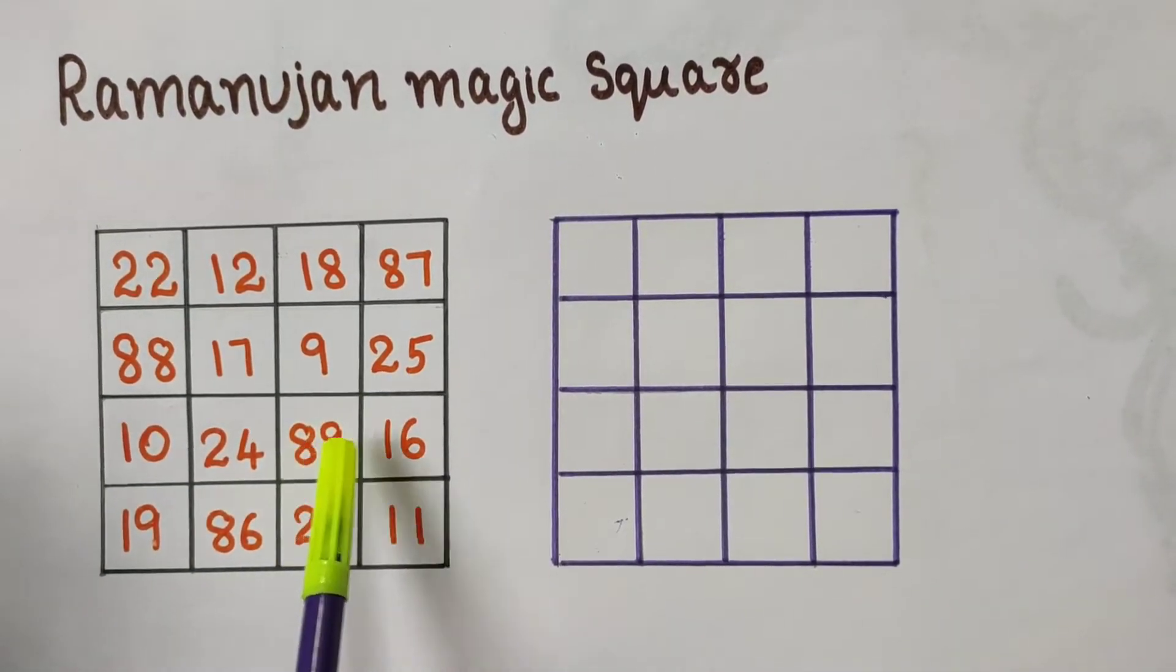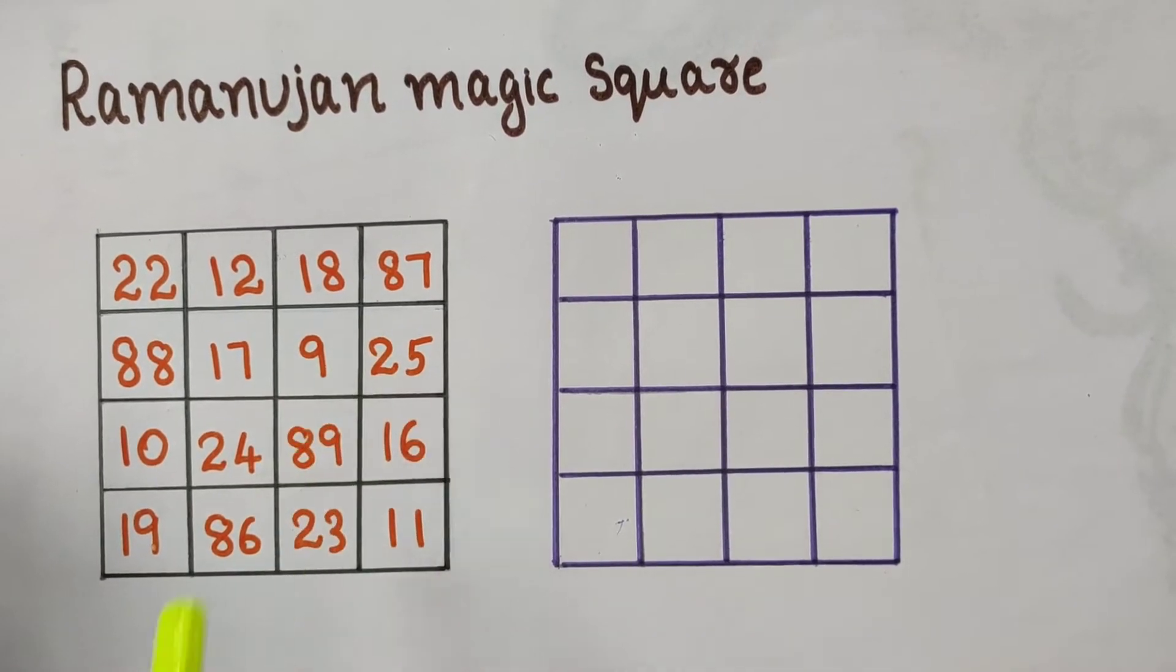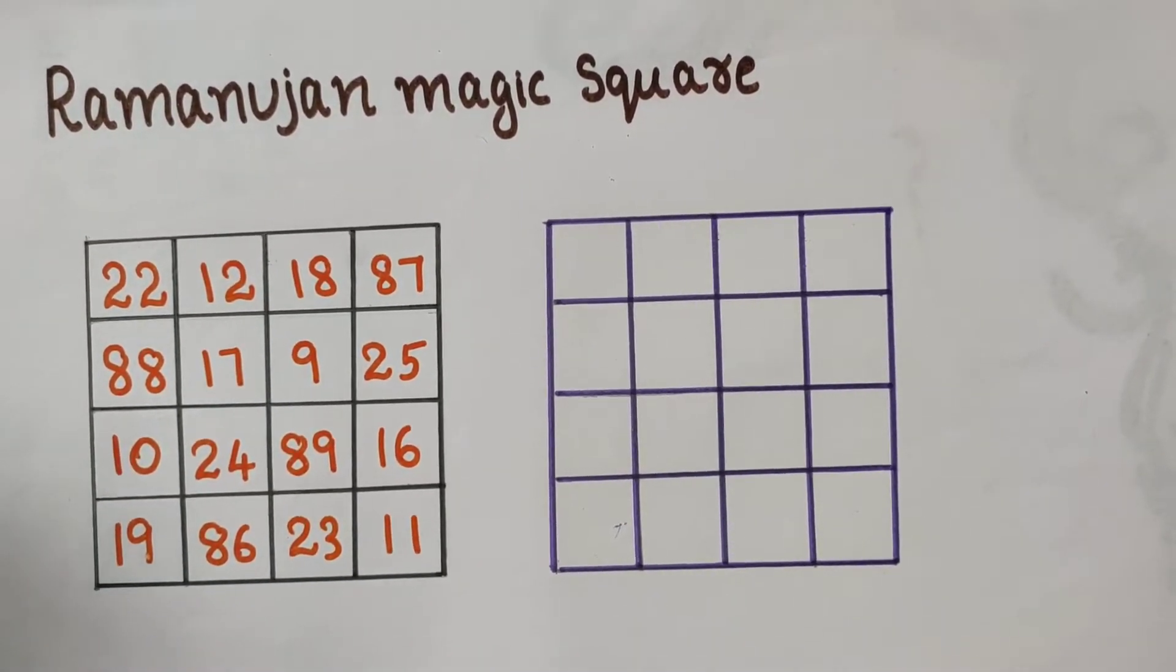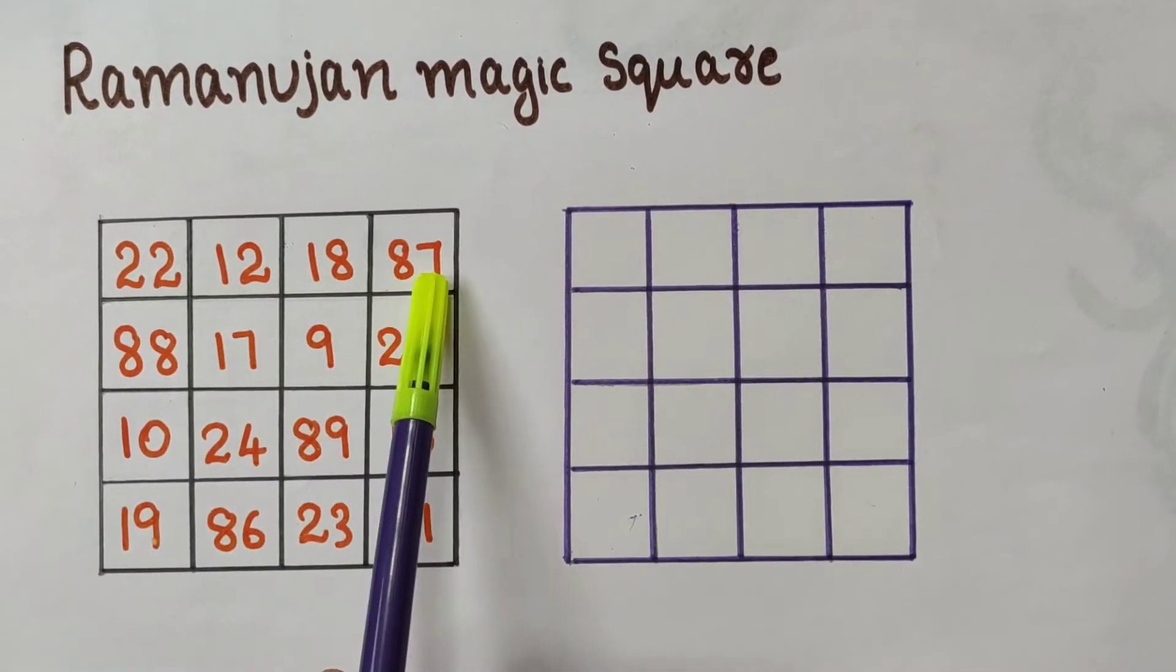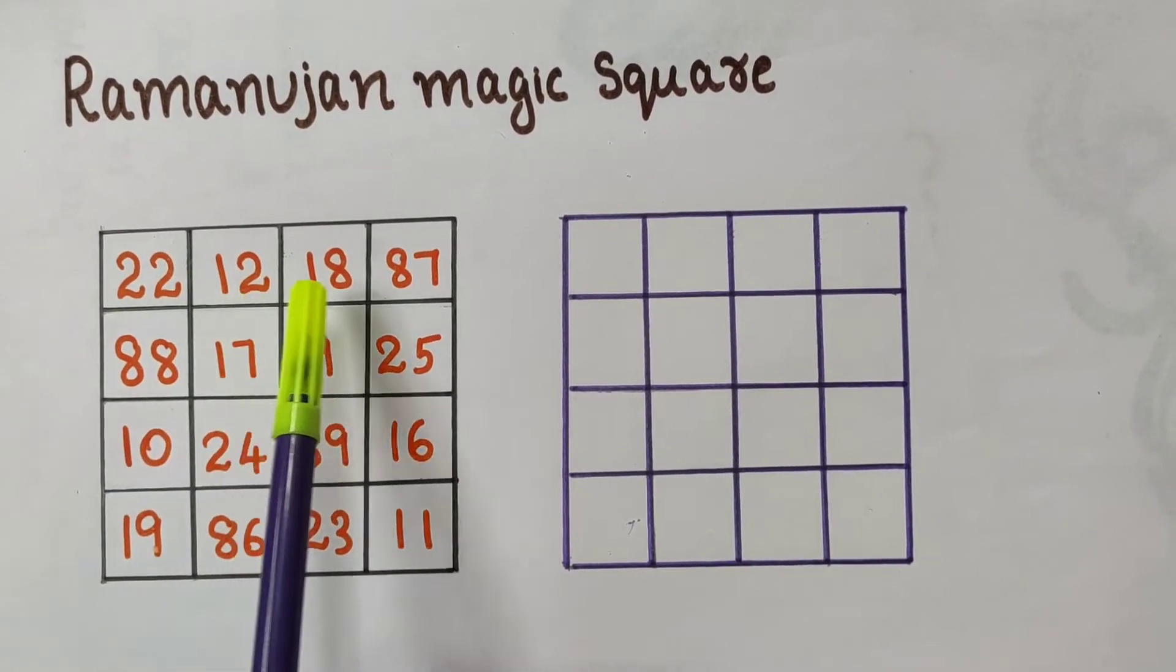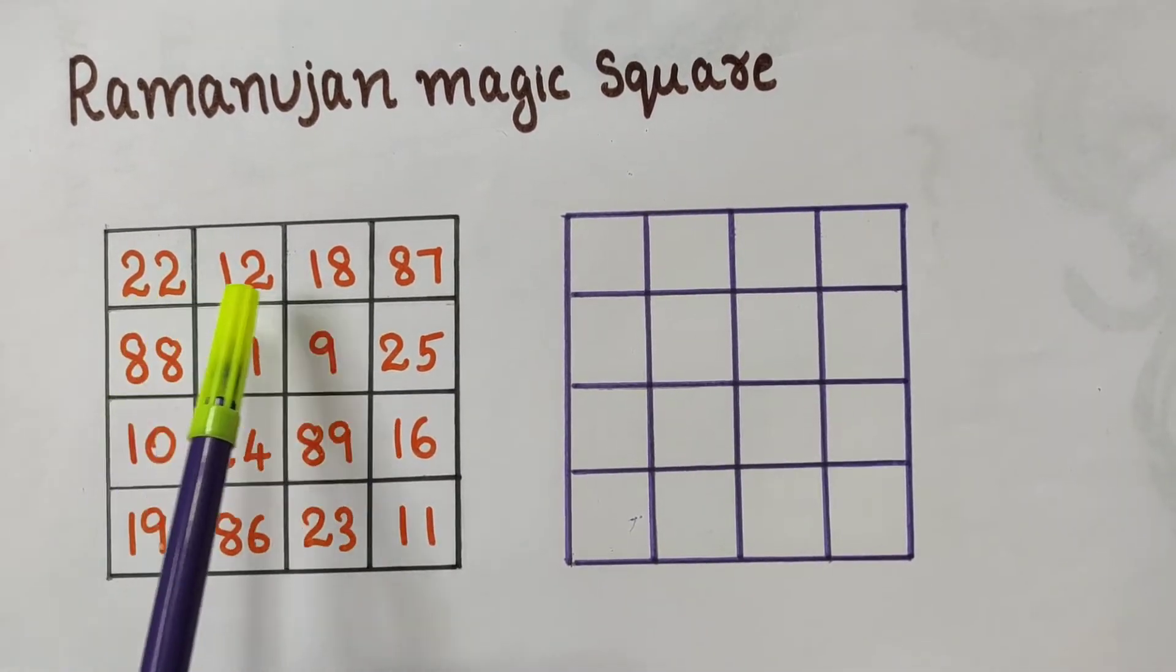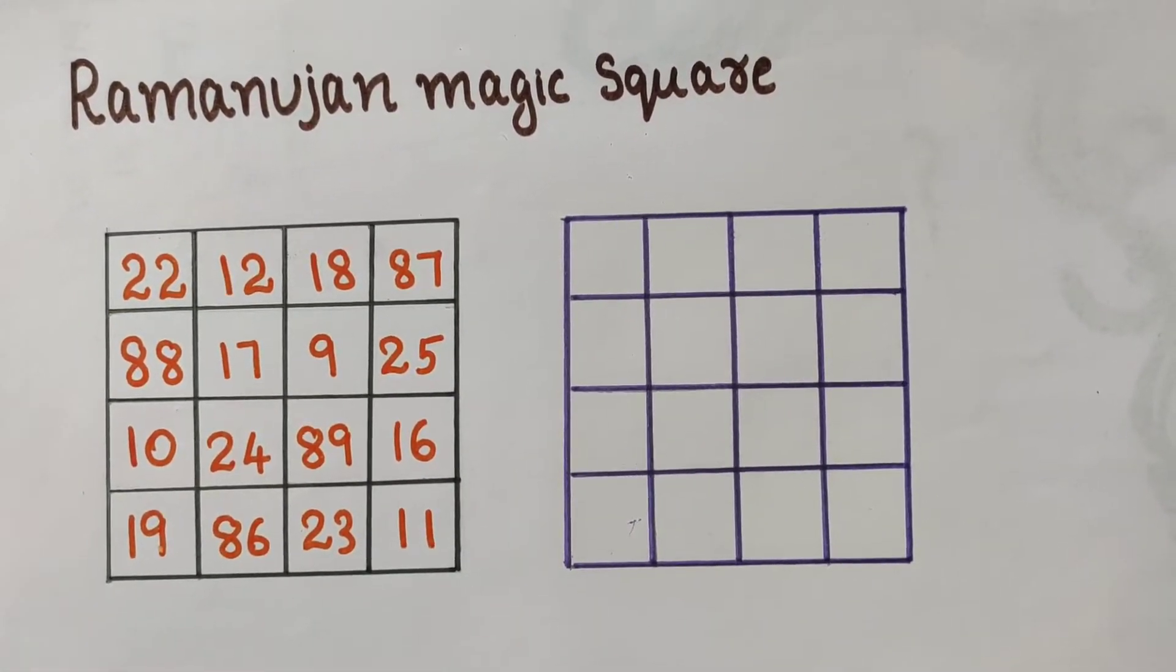Next is the square containing 9, 25, 89, 16. Sum of these numbers is 139. One more interesting fact about Ramanujan magic square is that check the first row: 22, 12, 18, 87. It is his birthday. He was born on 22nd December 1887.